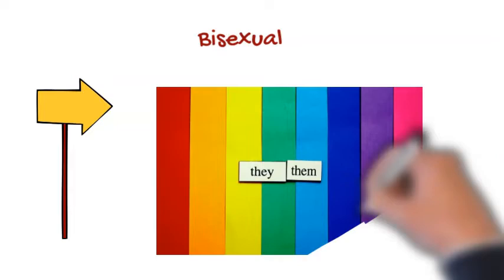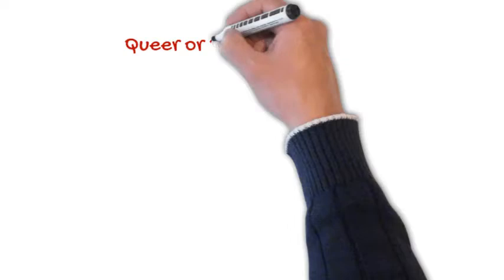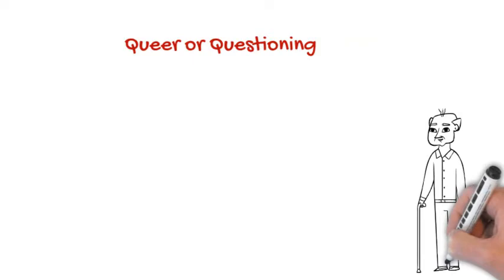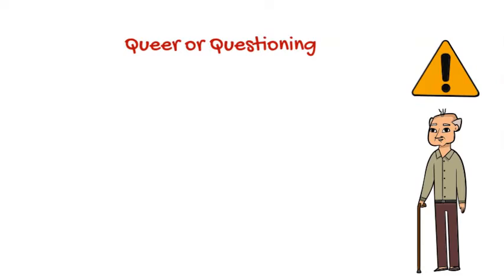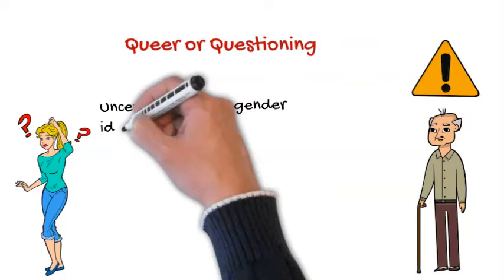Queer or Questioning: Queer was a term that was offensively used to refer to people who do not conform to sexual binaries. It is becoming more common now among millennials; however, seniors might still find it derogatory. Questioning refers to the uncertainty of some people about their sexual orientation and gender identity.